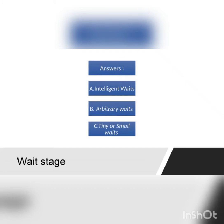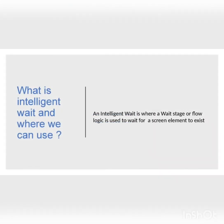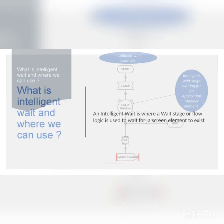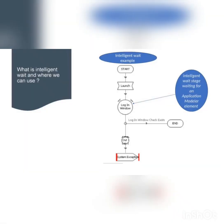Arbitrary waits may work perfectly in Process Studio or Object Studio, but when you run from the Control Room, these arbitrary waits cause a lot of issues. Developers often say it is working fine from my studio but not from Control Room, and that is because they are using a lot of arbitrary waits. If the waits are intelligent waits, your process will work from both Studio and Control Room. This is the main thing to understand.